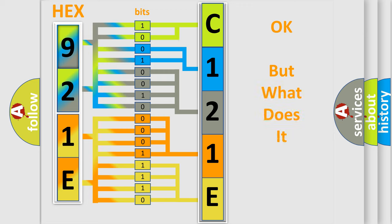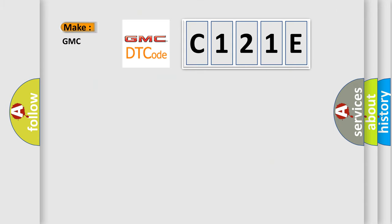The number itself does not make sense to us if we cannot assign information about what it actually expresses. So, what does the diagnostic trouble code C121E interpret specifically for GMC car manufacturers?